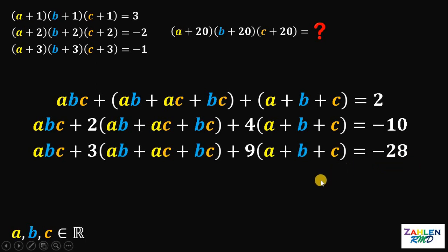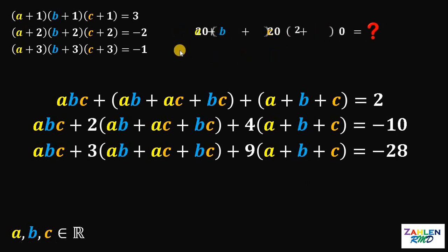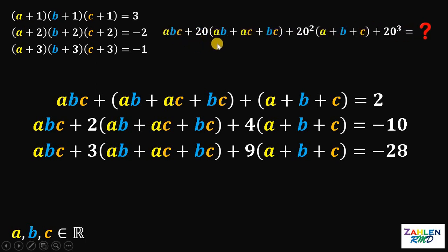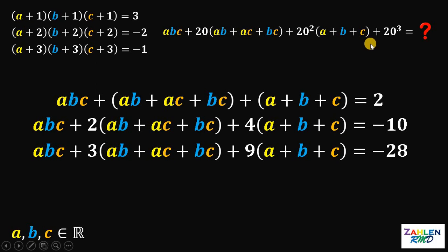Using the same pattern, our target expression (a+20)(b+20)(c+20) must be equivalent to abc + 20(ab + ac + bc) + 20 squared times (a + b + c) + 20 cubed. So our goal now is to solve for the values of abc, (ab + ac + bc), and (a + b + c).